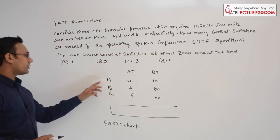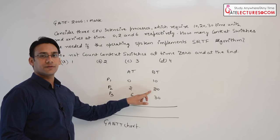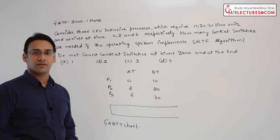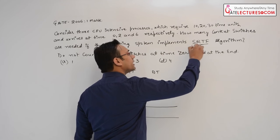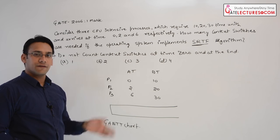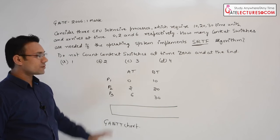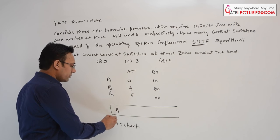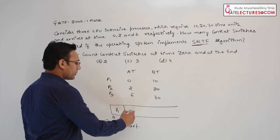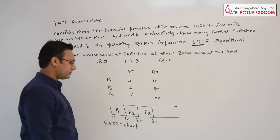At time 0, only process P1 is available. P1 is the smallest process, P2 is the next smallest, and P3 is the biggest. Even though the algorithm is Shortest Remaining Time First, if we start P1 first it will always be the smallest. After P1, P2 will always be smaller than P3. So we execute P1 from time 0 to 10, then P2 from time 10 to 30, then P3 from 30 to 60.